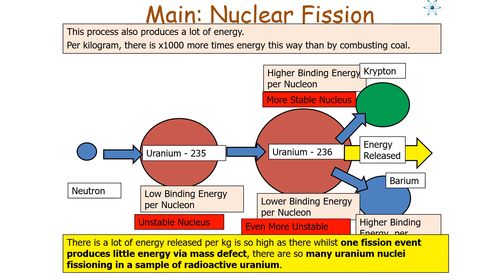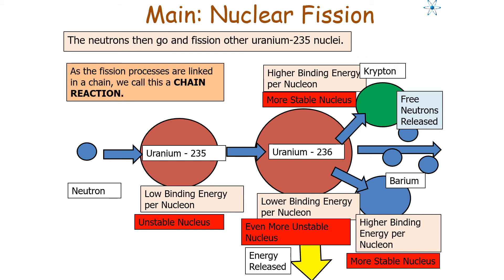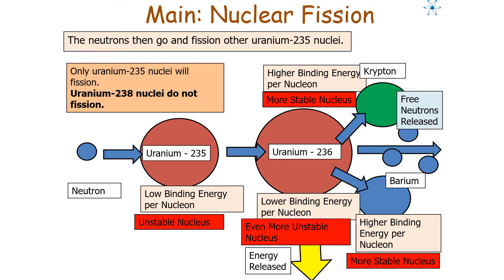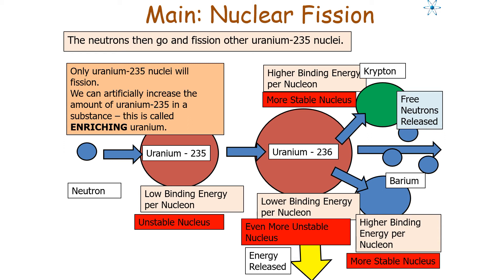There is lots of energy released per kilogram in nuclear fission: whilst one fission event produces little energy via the mass defect, there are so many uranium nuclei fissioning in one sample that the total energy released is very large. The fission process also produces three neutrons when it splits, and these neutrons go on to fission other uranium nuclei — we call this a chain reaction. Only uranium-235 nuclei will fission; uranium-238 nuclei do not fission, so the greater the amount of uranium-235, the greater the fission rate.